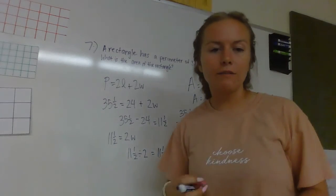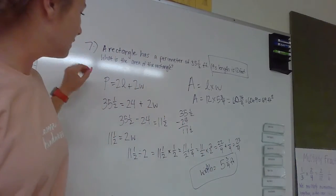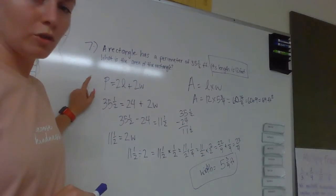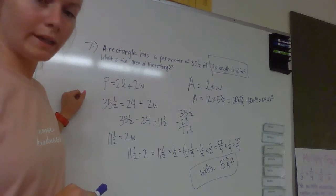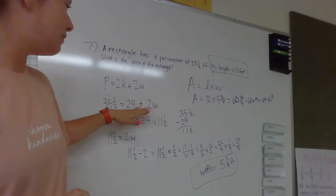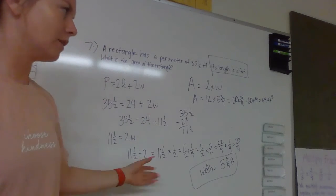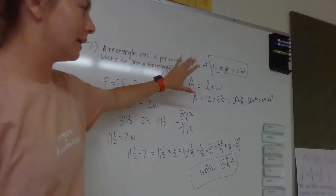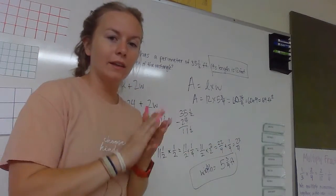Okay, there is a lot of different steps in this one. You need to know that perimeter equals 2 length plus 2 width and then figuring that out by subtracting, then we had to divide and we had to find the area.